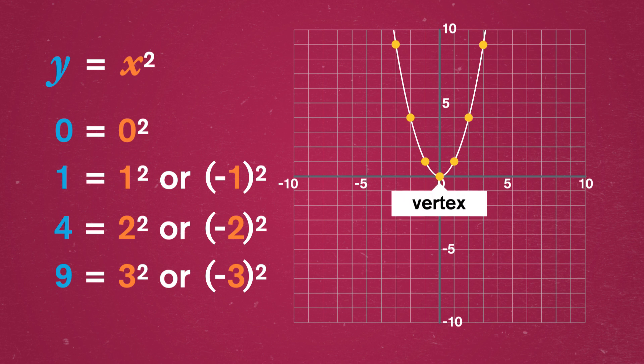In this graph, the vertex – the point where the curve changes direction – is at zero. It's the low point of the graph, or the minimum. That's the graph of the only parabola we'll ever need.